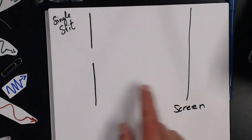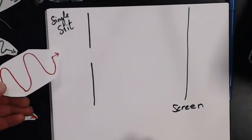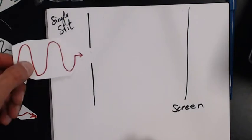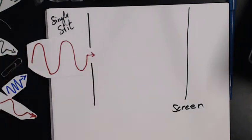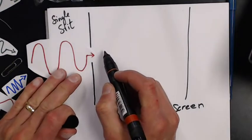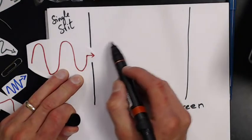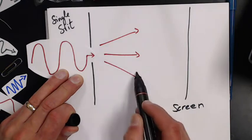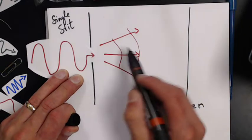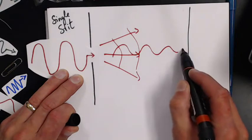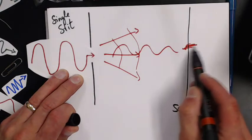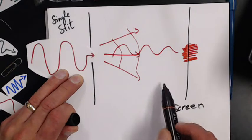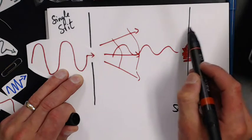So here's a single slit and here's a screen. Let's send a wave through it. When it hits the slit, it's going to begin to spread out and go off in different directions.